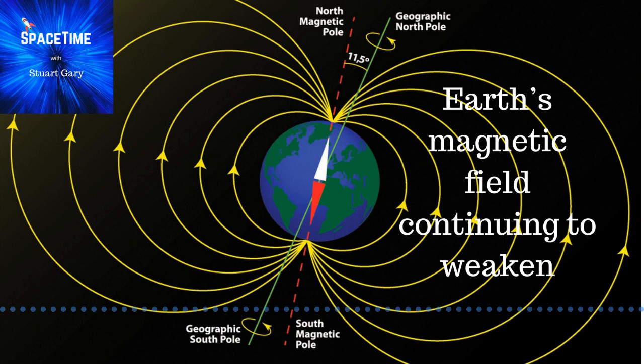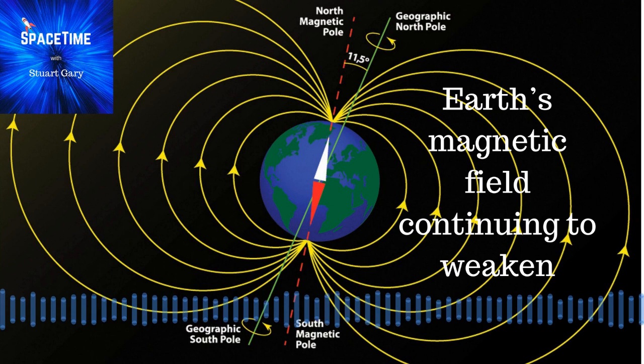Scientists are using data from the Swarm constellation to better understand this anomaly. The Swarm satellites are designed to identify and precisely measure the different magnetic signals that make up Earth's magnetic field.